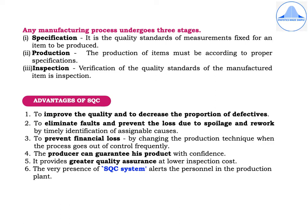Some advantages of SQC: it helps improve quality and decrease the proportion of defectives. It eliminates faults and prevents loss due to spoilage and rework by timely identification of assignable causes. It helps prevent financial loss — when the process frequently goes out of control, the production technique can be changed. The producer can guarantee his product with confidence. SQC provides greater quality assurance at lower inspection cost. Also, having an SQC system in the production plant alerts all personnel working in the production unit.